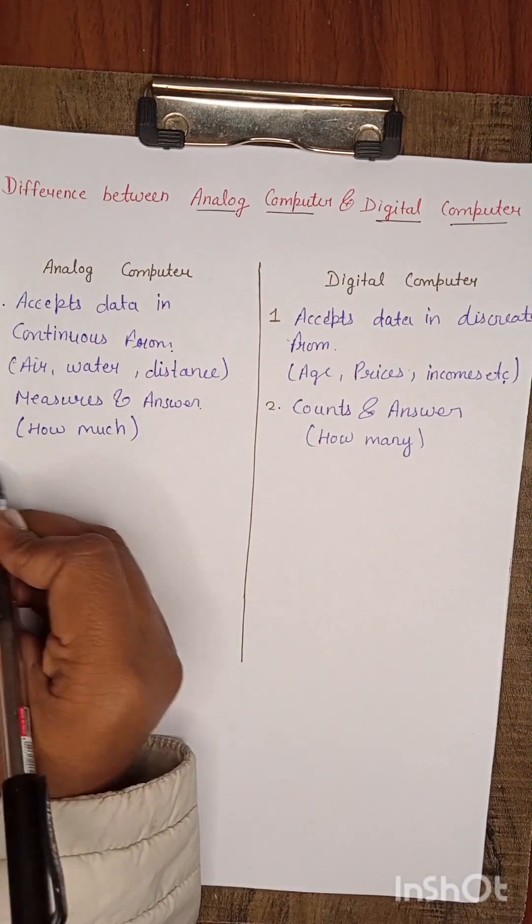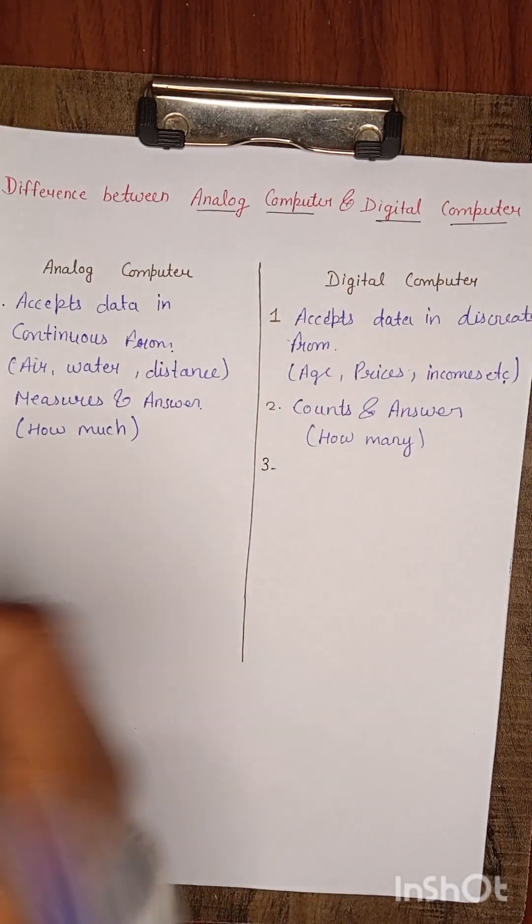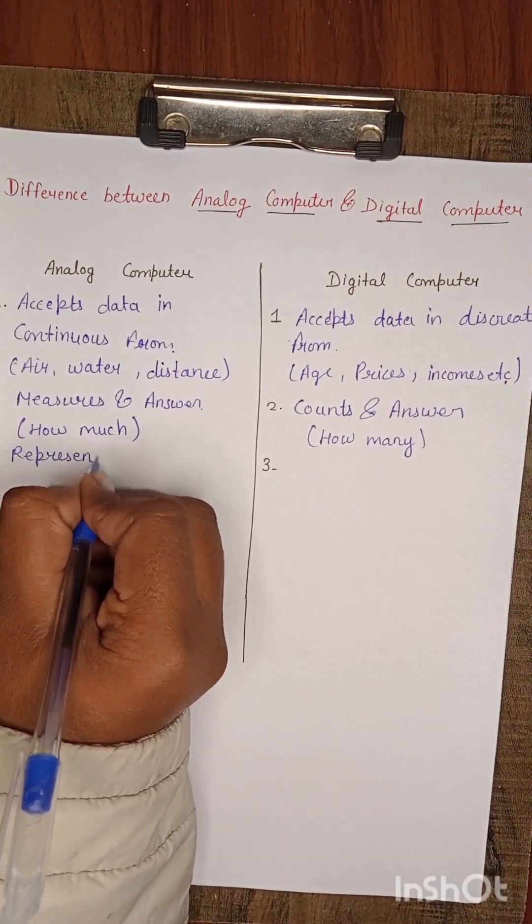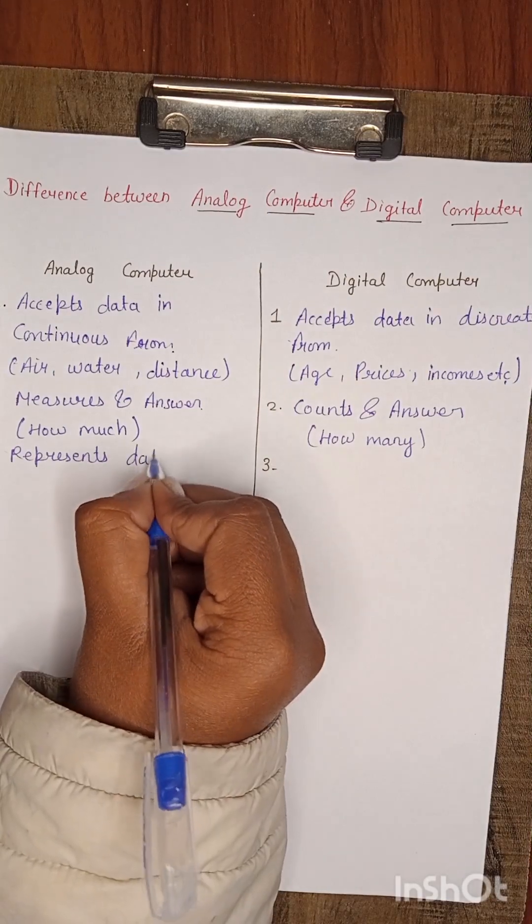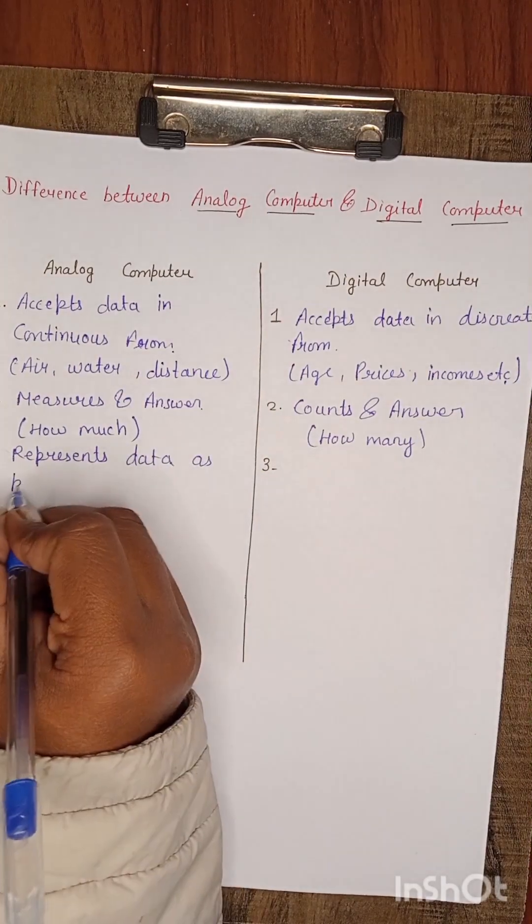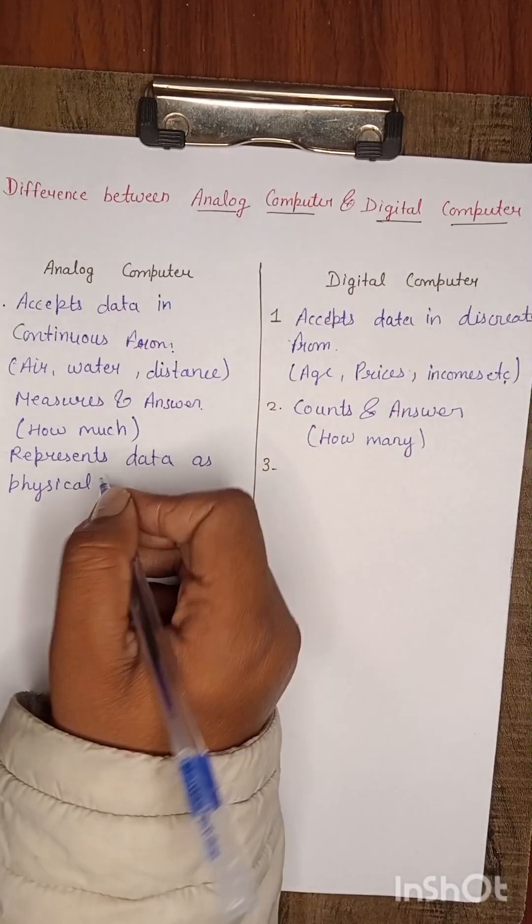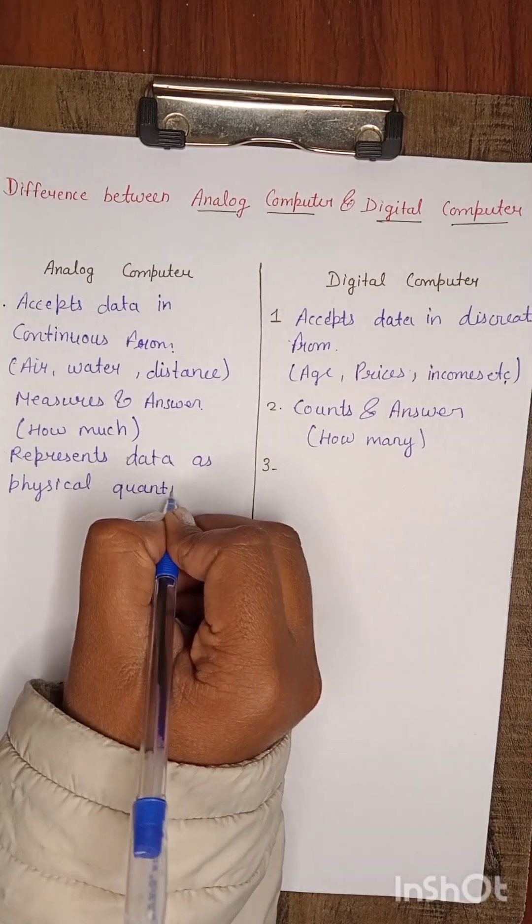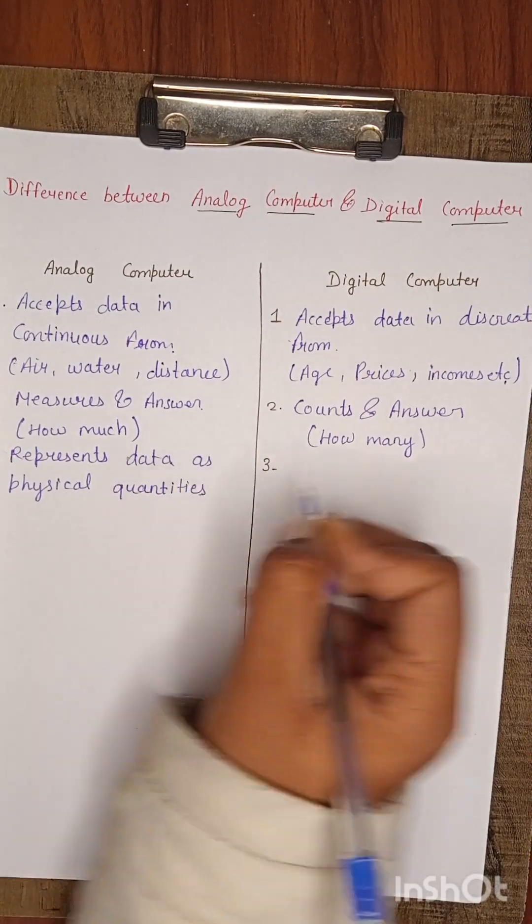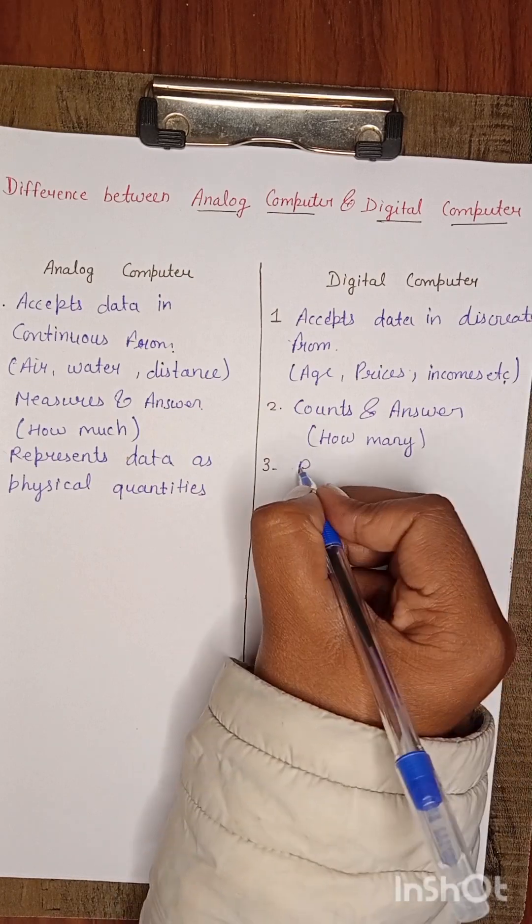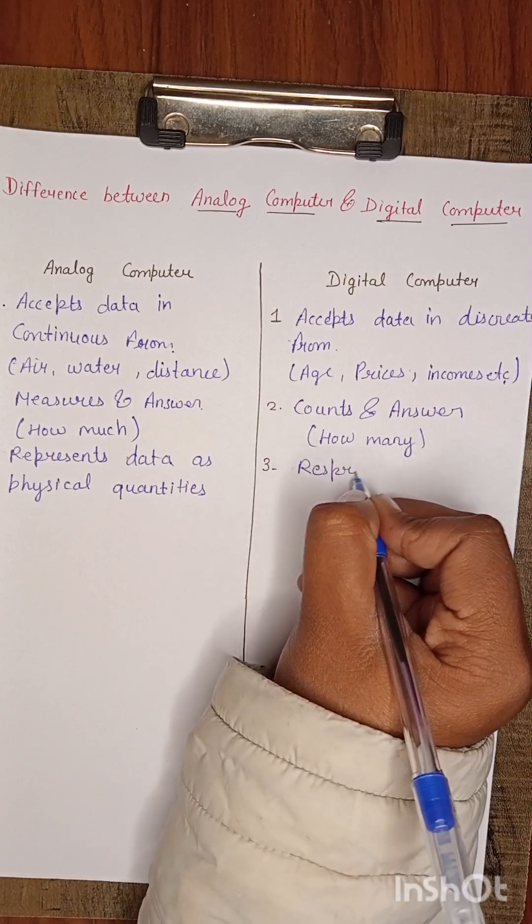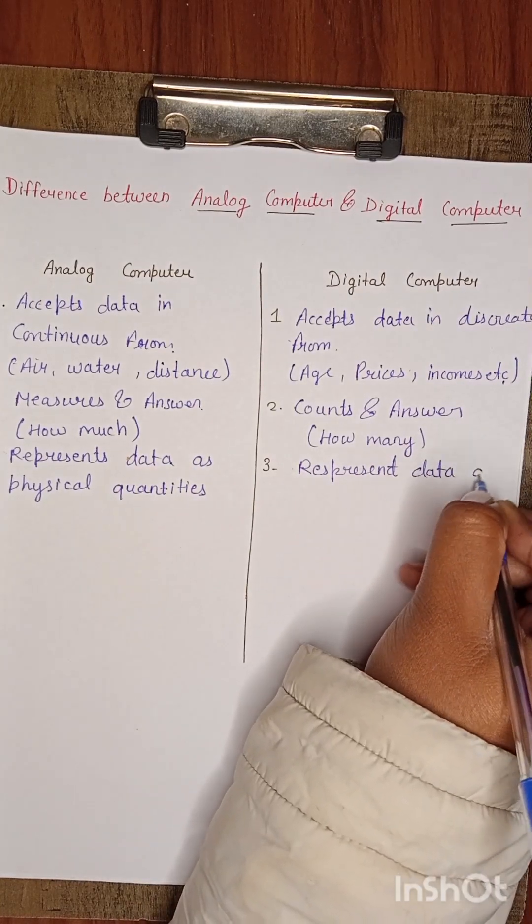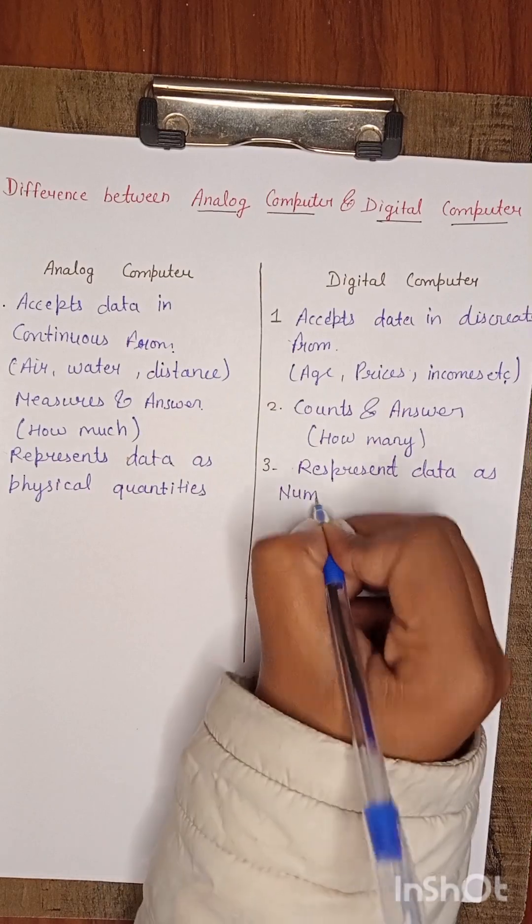Third point: Analog computer represents data as physical quantities. Digital computer represents data as numbers.